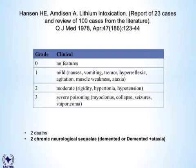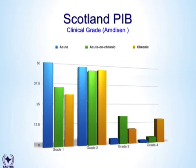This is the only prospective study of follow-up of patients looking for chronic neurological sequelae in the literature. Applying the clinical grades of toxicity to the Scottish data, the high grades — grade 3 and grade 4 — are only really seen predominantly in patients with acute on chronic or chronic toxicity, not acute toxicity.